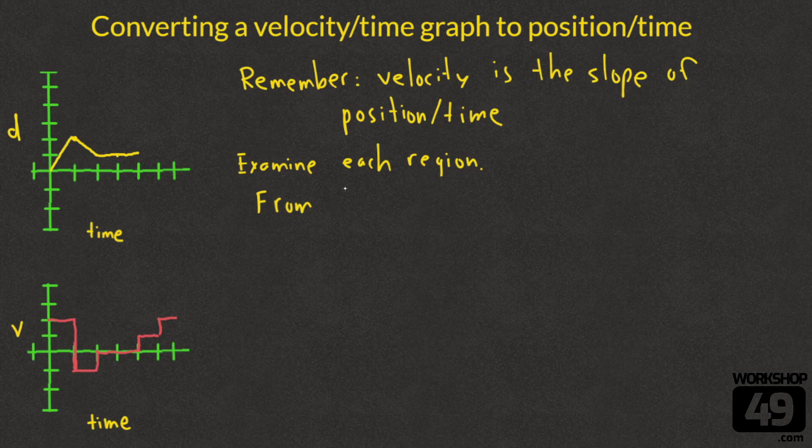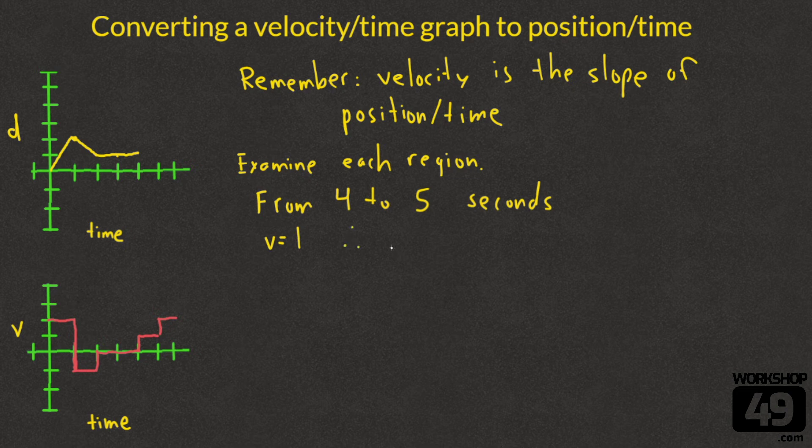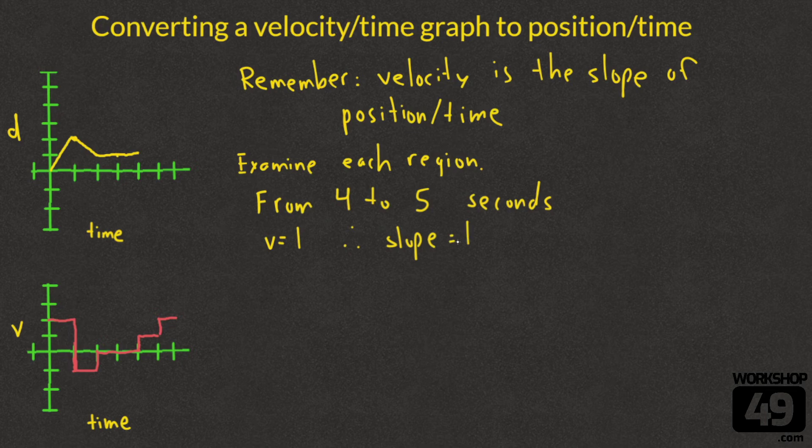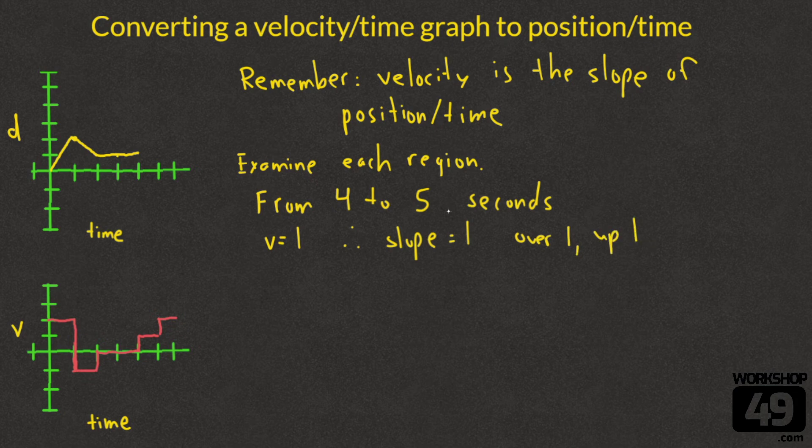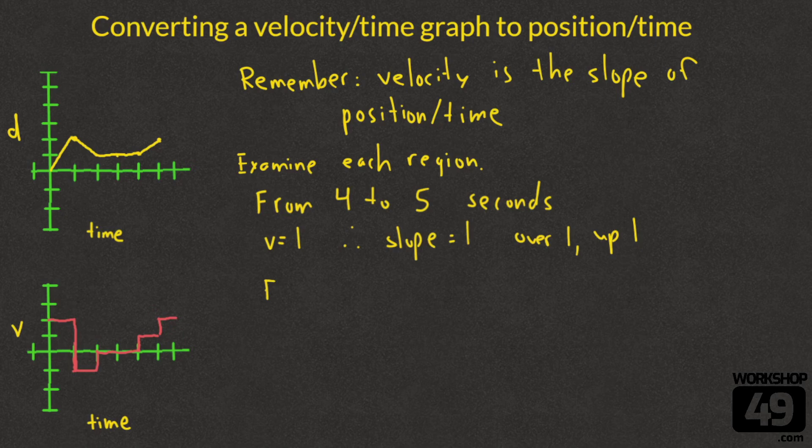The next region that we're going to look at is from 4 seconds to 5 seconds. In this interval, the velocity is at a value of 1. Therefore, the slope of our position time graph must equal 1. That means we're going to go over 1 and then up 1. You always go up or down by whatever the value of the slope is. You always go over 1. So we make a little dot and connect it.